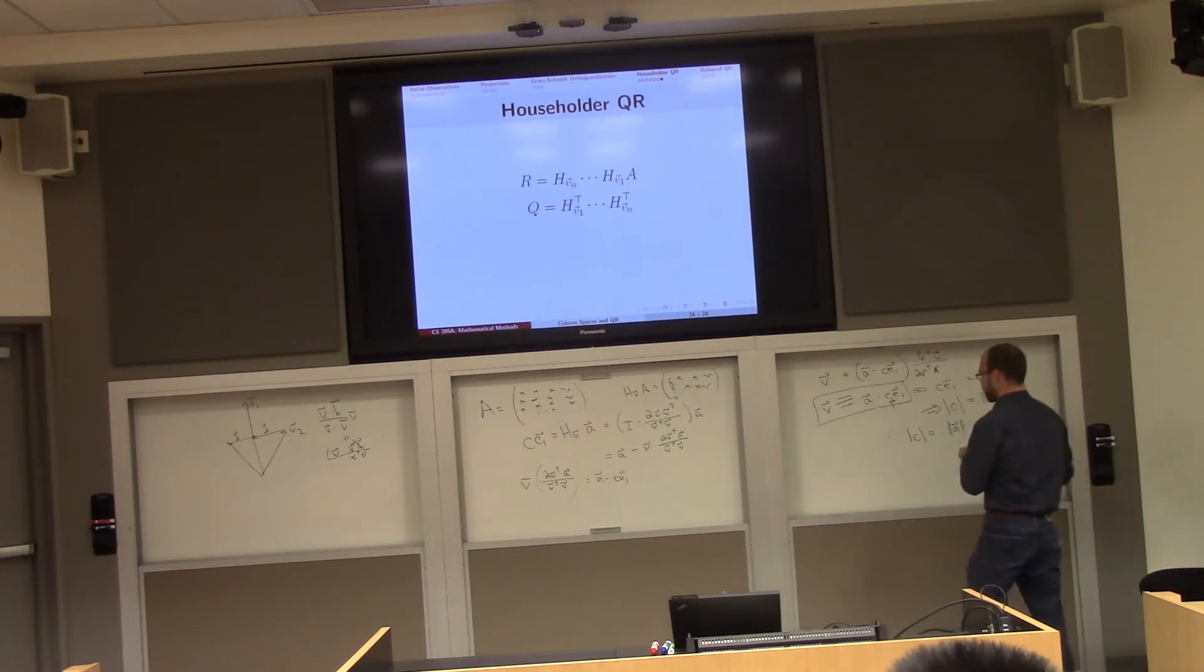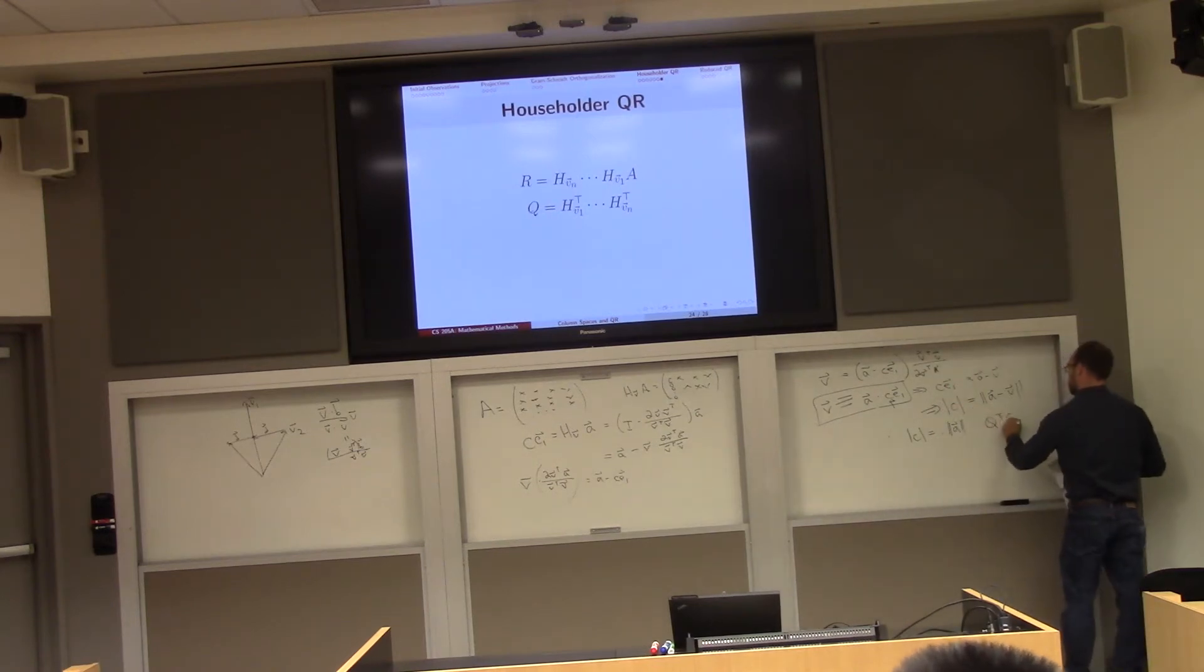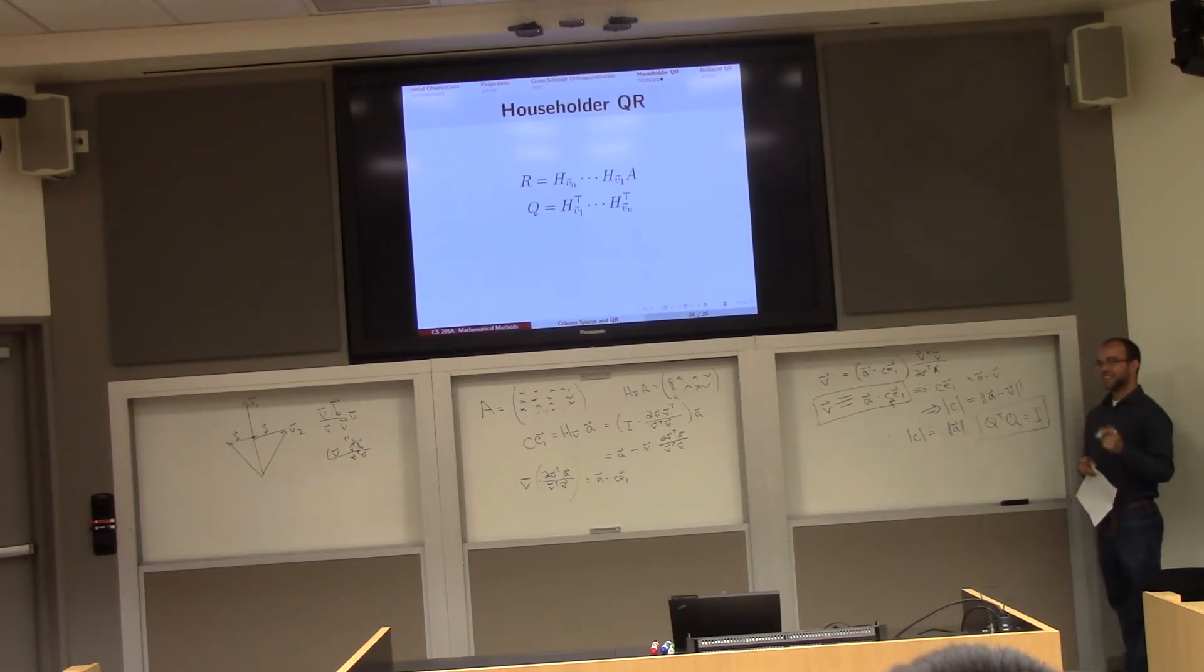Why do you know that by the way? We know Q transpose Q equals I, and what is the definition of the inverse of a matrix? It's the thing that you multiply by to get the identity matrix, so we know that Q inverse is equal to Q transpose.